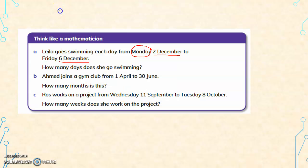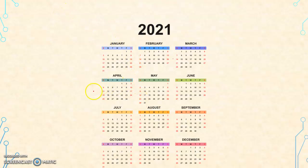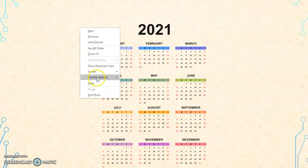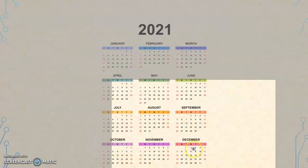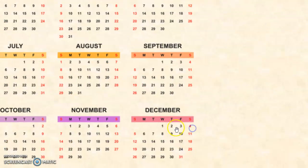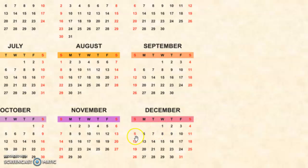Let us look at the calendar. From 2nd December to 6th December, every day she goes to the swimming pool. How many days does she go to the pool? Counting: 1, 2, 3, 4, 5 — she goes for 5 days.